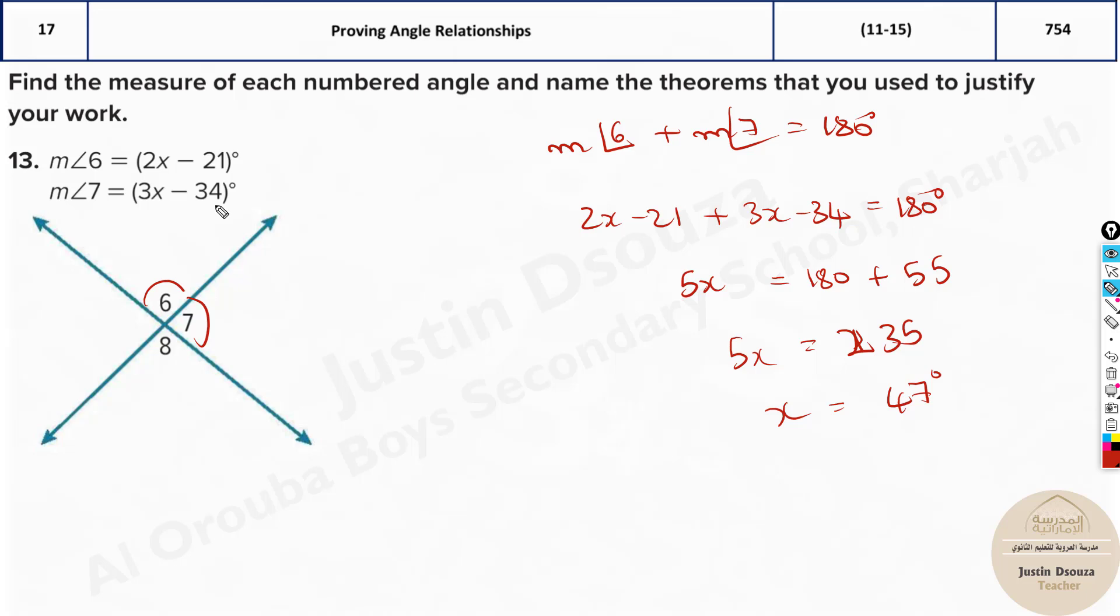Divide both the sides by 5, you will get x is equal to 47 degrees. So now you just substitute it back, and we have to find all the numbered angles. If you substitute this as 2 times 47 minus 21, you're going to get measure of 6, and measure of 7 would be 3 times 47 degrees minus 34. So just put this in the calculators: 94 minus 21 is 73 degrees, this one, measure of angle 6. Same way you can find the next one, 7. Now what about measure of angle 8? These are vertical angles, 6 and 8, so if this is 73, this must also be 73 degrees.